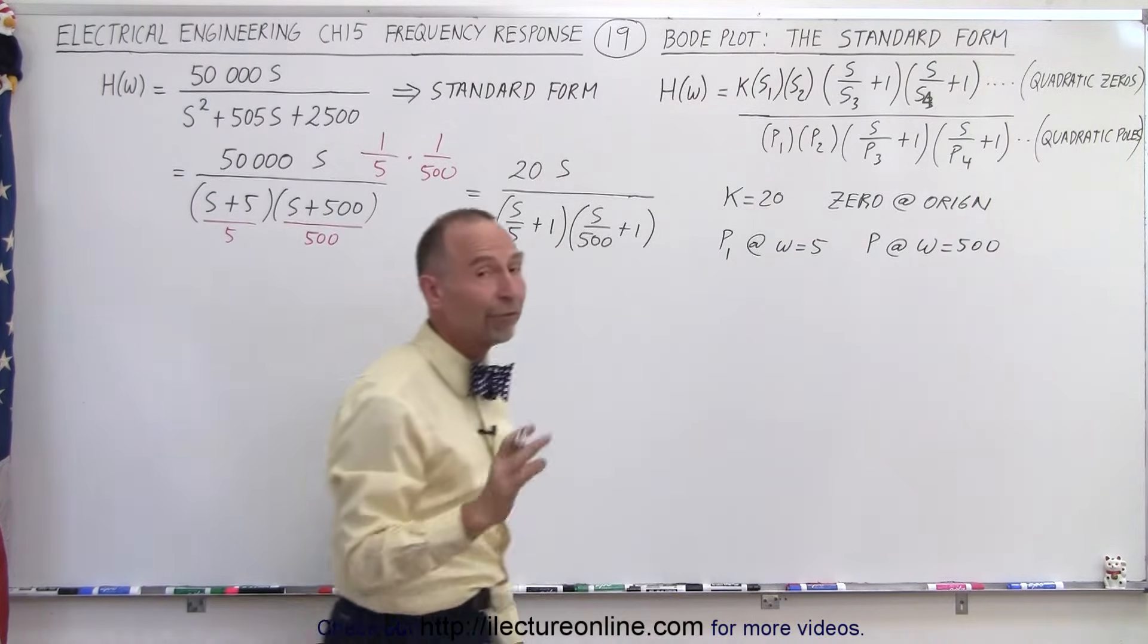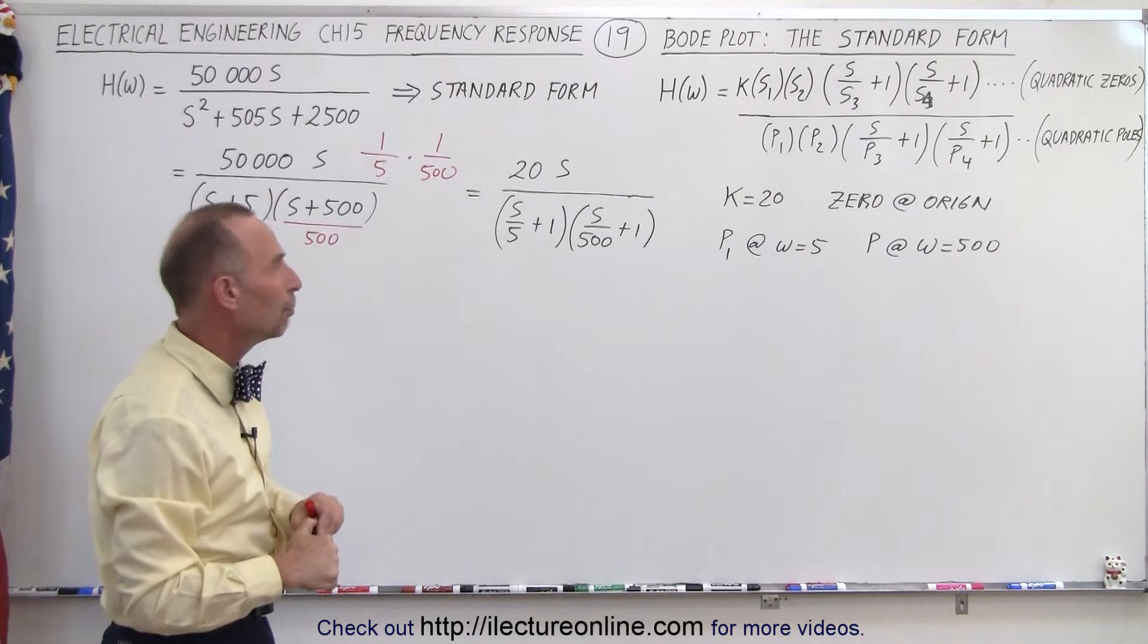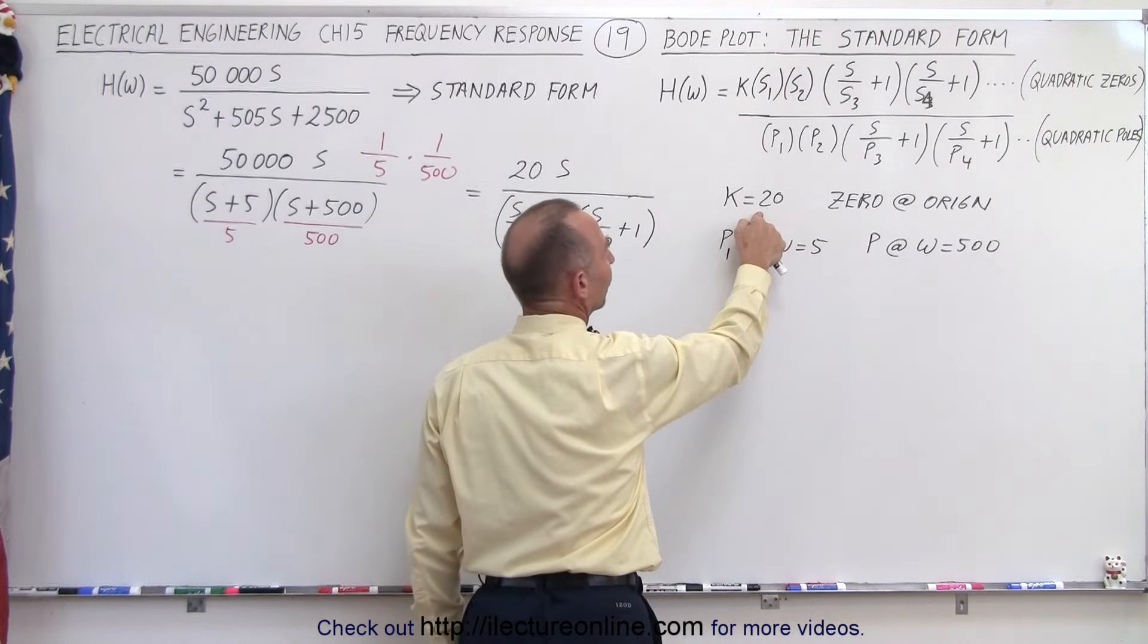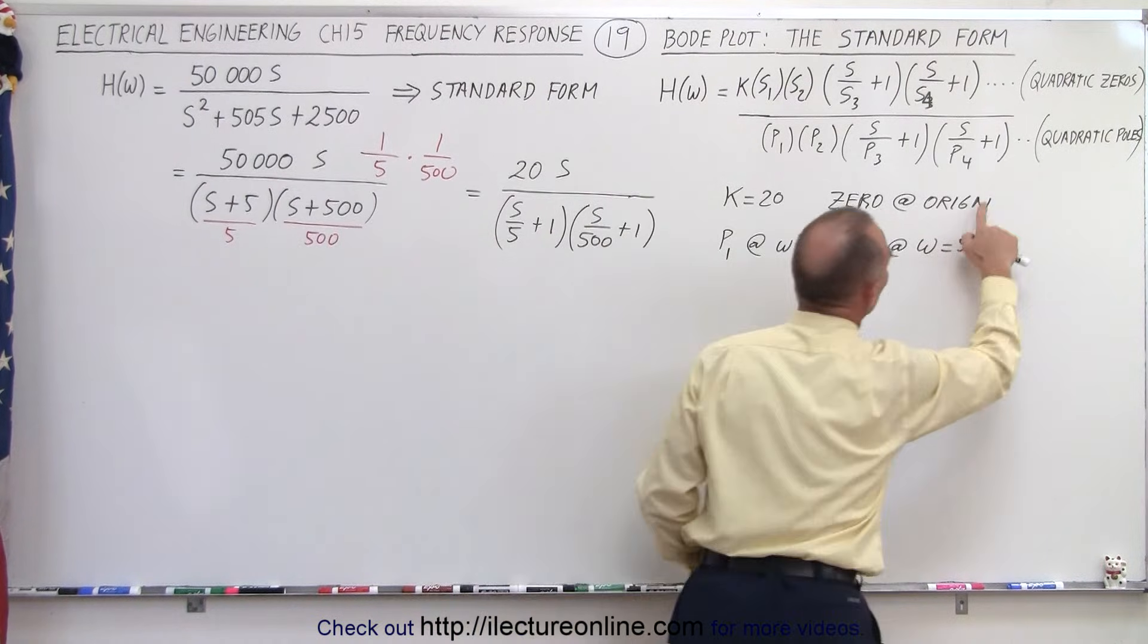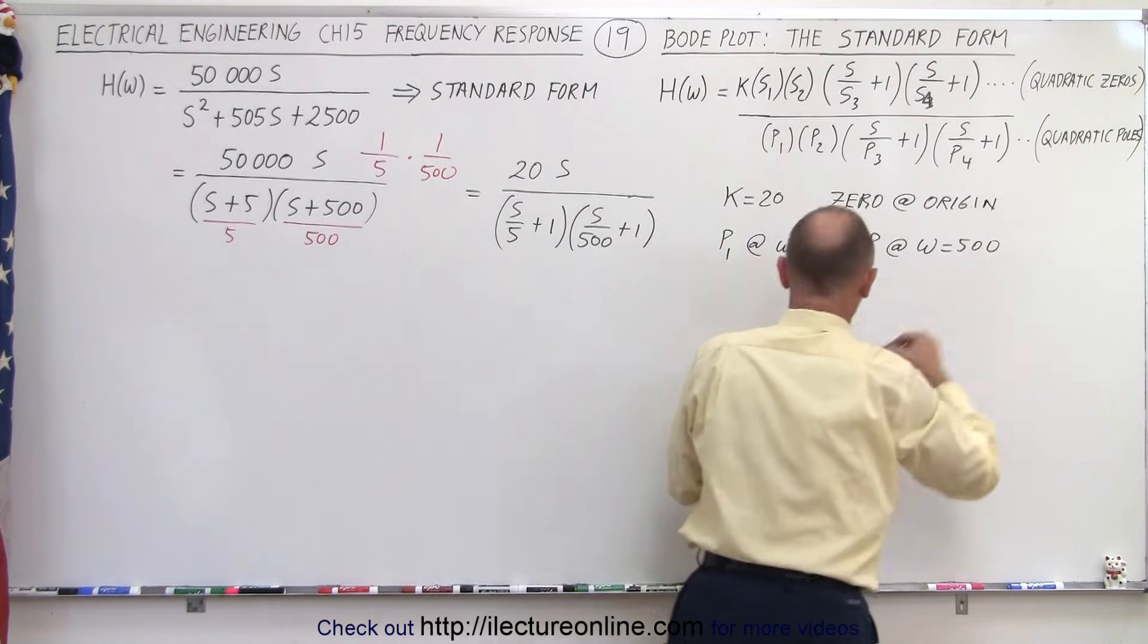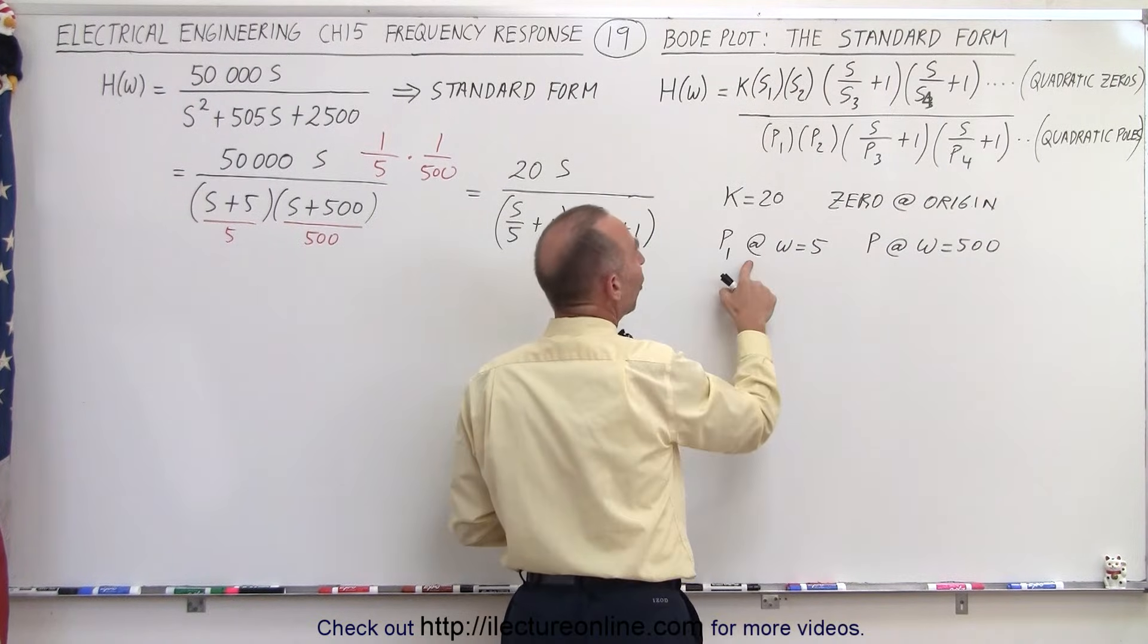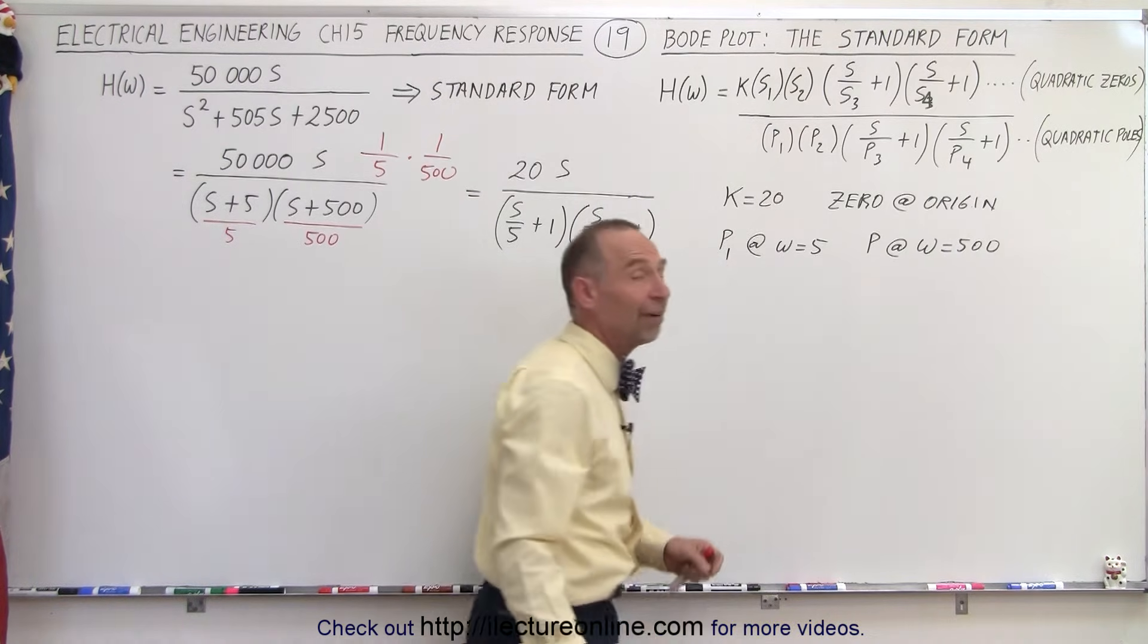So now there's those four values that we need to concern ourselves with if we're going to draw a Bode plot. That means we have a Bode plot for the constant gain, we have a Bode plot for the zero at the origin, we're going to have a pole at omega equals 5 and a pole at omega equals 500.